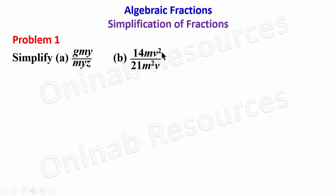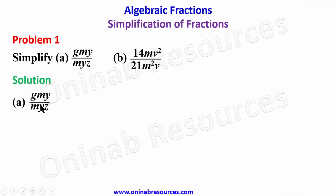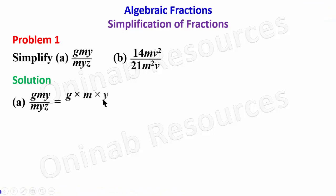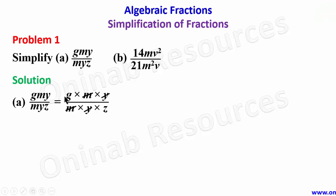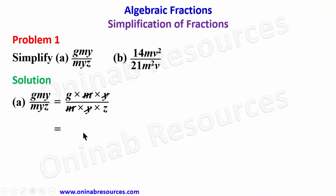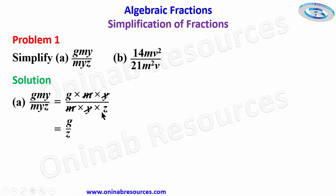For the solution to part (a), gmy means g times m times y over m times y times z, since myz is expanded as m times y times z. From here, the m cancels with m, and y cancels with y. We are left with g at the numerator and z at the denominator, giving the simplified form g over z.